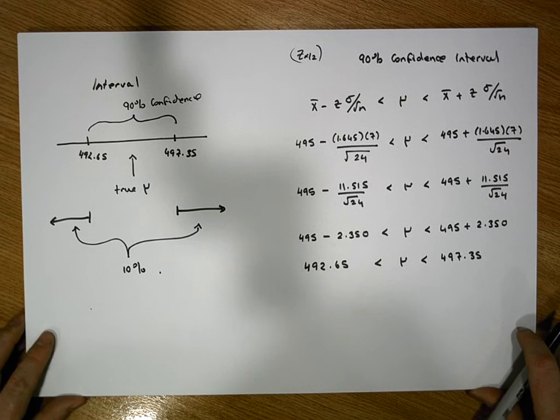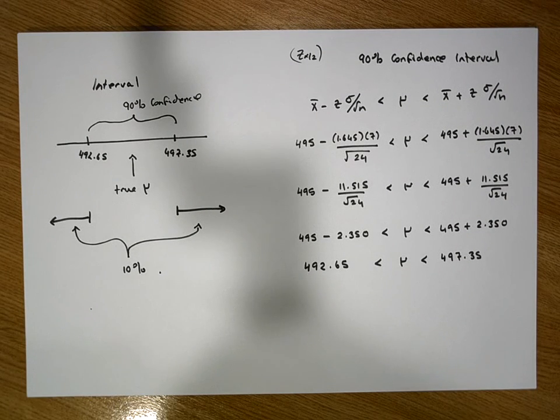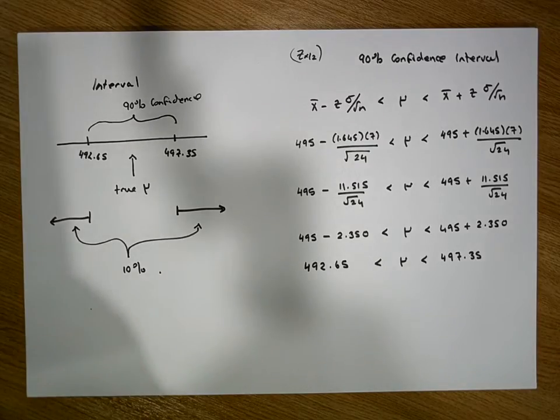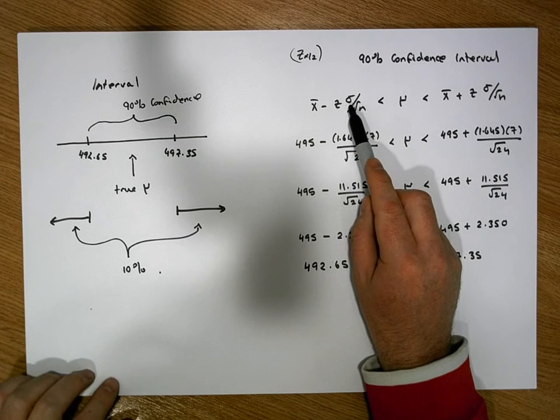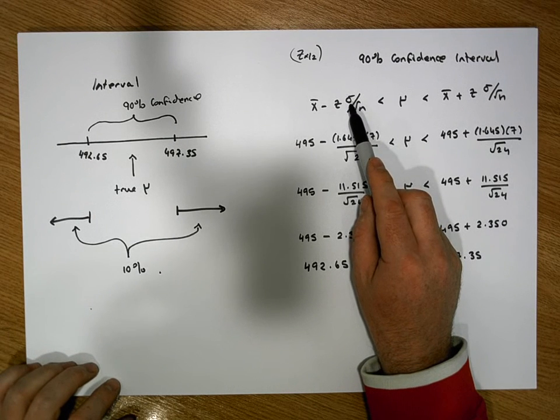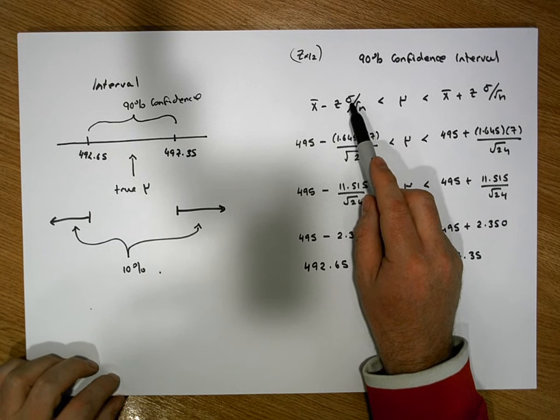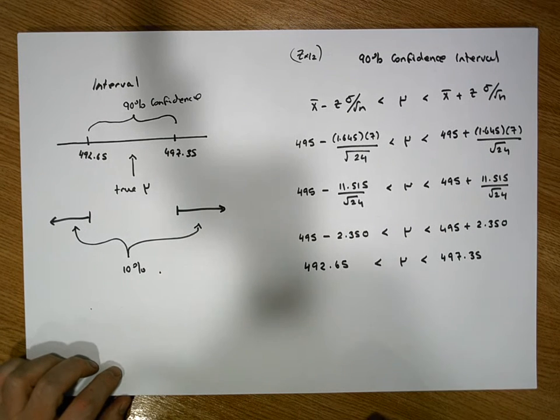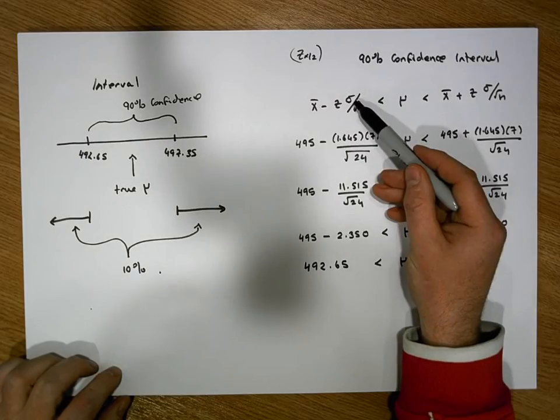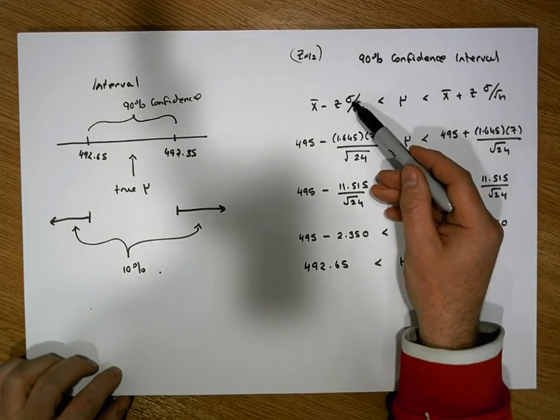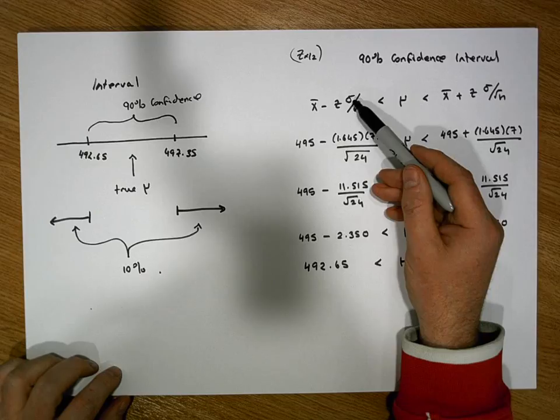So guys, hopefully this was somewhat intuitive. In this particular example, we used, we constructed a 90% confidence interval where we knew what the population standard deviation was. In another video, we'll do the same calculation, but this time we will assume that we don't know the population standard deviation. And we'll estimate the population standard deviation using the sample standard deviation.